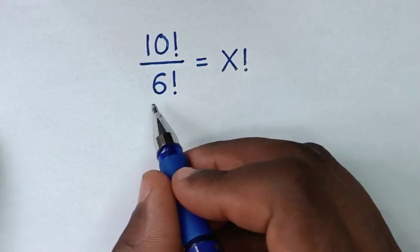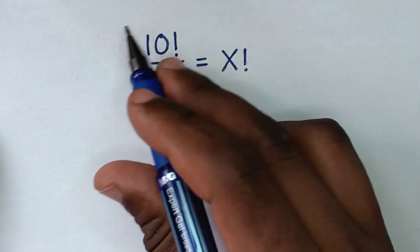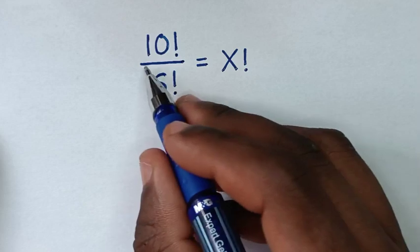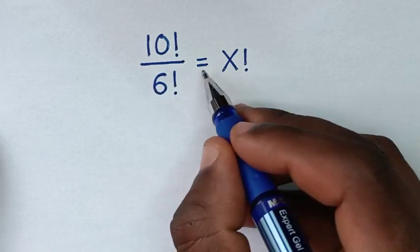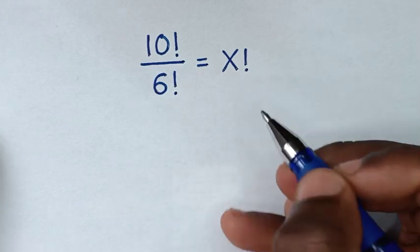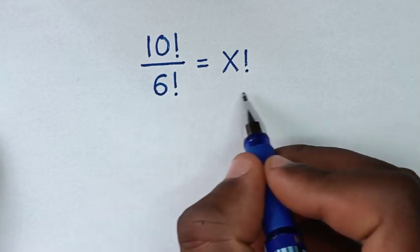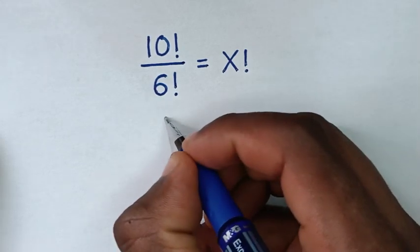Hello, you are welcome to solve this math problem, which is 10 factorial over 6 factorial equals x factorial. To find the value of x from this equation, now solution.